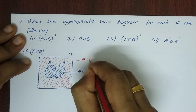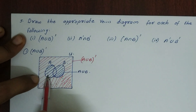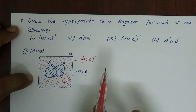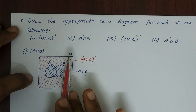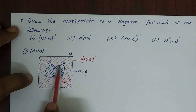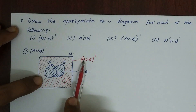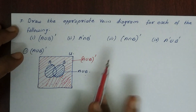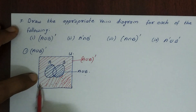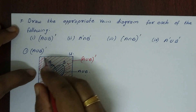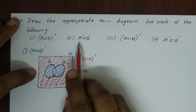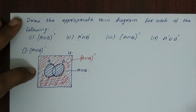A union B the whole complement is the portion of the universe set not covered by A union B. We have to identify those two components — the parts of U outside both A and B.